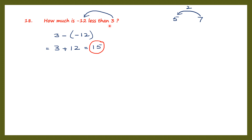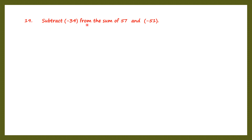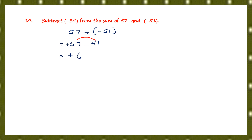Whenever you get questions like these that are difficult to understand, substitute with simple numbers to make it easier. Question 19: subtract minus 34 from the sum of 57 and minus 51. Sum means addition, so first find the sum. Add 57 plus minus 51: opening the bracket with a plus before it means no change in sign. Signs are different, so put the sign of the bigger number and subtract: 57 minus 51 is 6, giving plus 6.